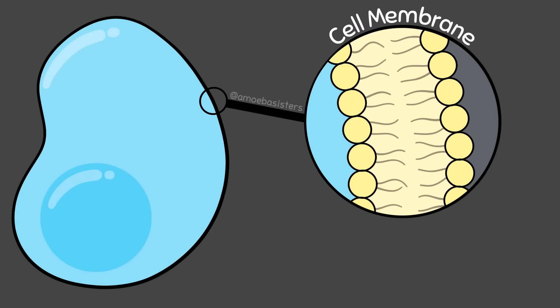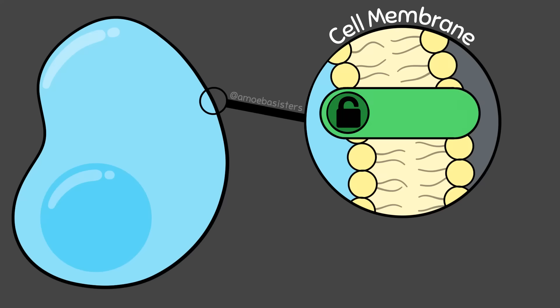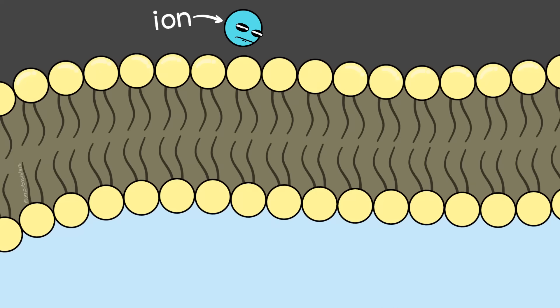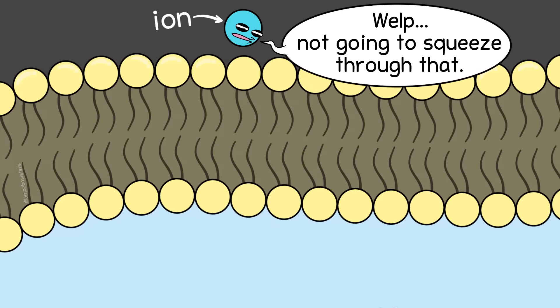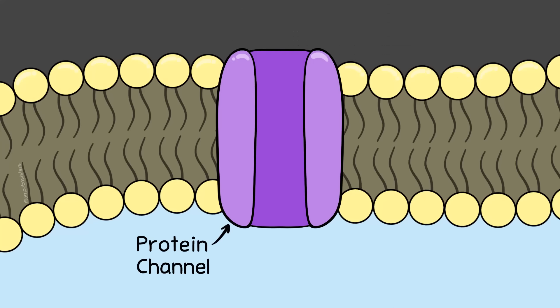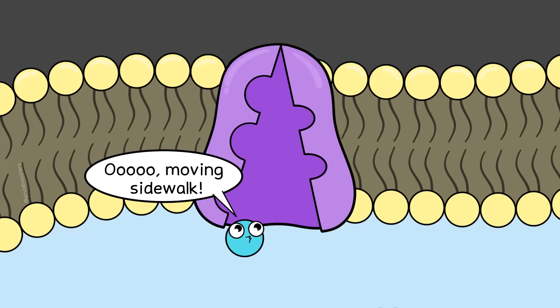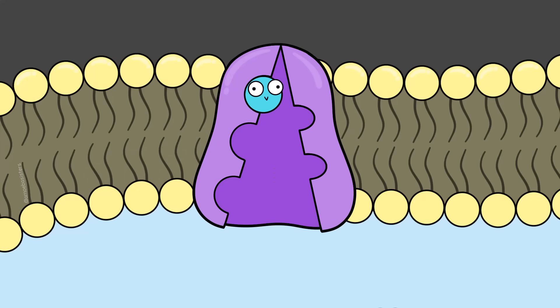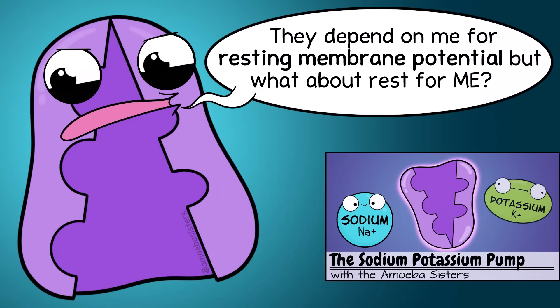All cells have membranes. Membranes are critical in controlling what goes in and out of the cell, including controlling what ions go in or out. Ions are charged particles, and they generally don't get through the cell membrane by themselves. They typically need proteins where ions can passively flow through, or if ions are being transported against their gradient, they typically need a protein pump to help.